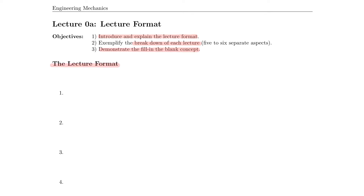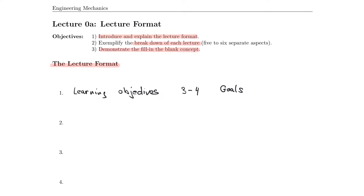I start every lecture with the learning objectives. These are my goals for a particular lecture, and it's very important to understand that I try to make these goals very single-focused. Each lecture is usually broken down into three to four learning objectives — these are our goals for the individual lecture. It's important that we understand where we want to go before we start something.